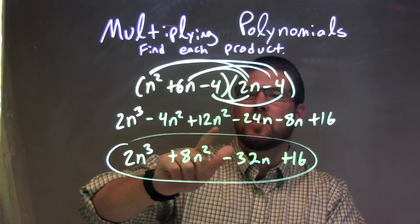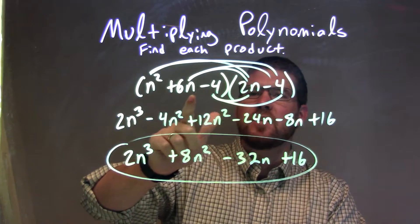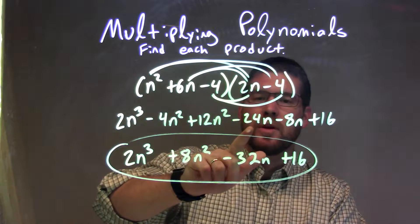6n times 2n was 12n squared, and 6n times minus 4 was minus 24n.